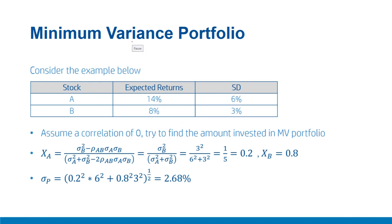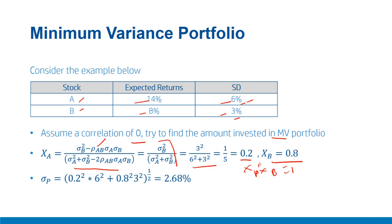Let us consider a simple example with two securities. Stock A has expected return 14% and standard deviation 6%; Stock B has expected return 8% and standard deviation 3%. Assuming correlation rho_ab = 0, we solve for xa. Putting rho_ab = 0, we get xa = 0.2 and xb = 0.8. We then compute sigma p = (0.2² × 6² + 0.8² × 3²)^(1/2) = 2.68%. This is the risk of the minimum variance portfolio.